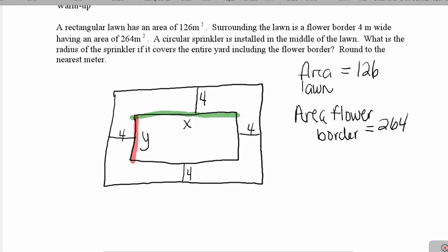The area of just the flower border is 264 meters squared. So what would be the area of the entire thing—the area of the lawn and the area of the flower border? The total area we would get just by adding those two numbers together: 126 plus 264. You should get 390 as the area of the entire thing.